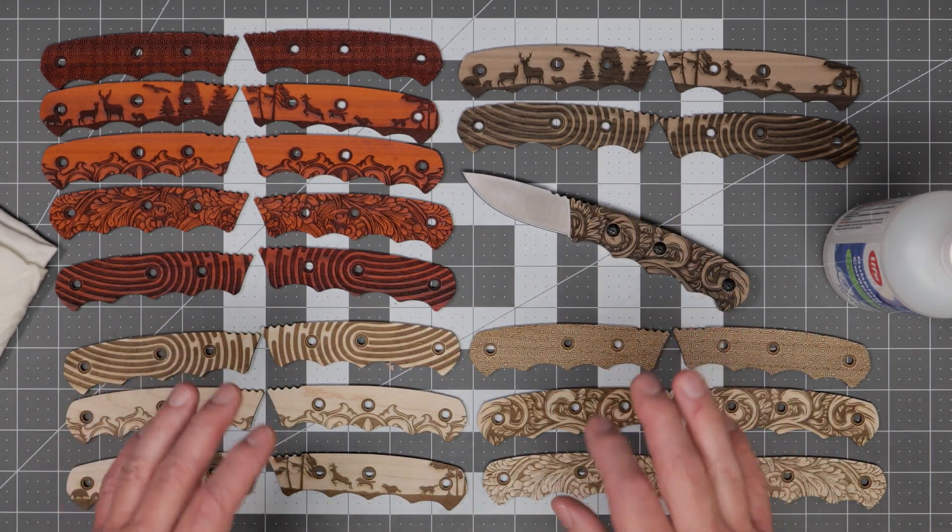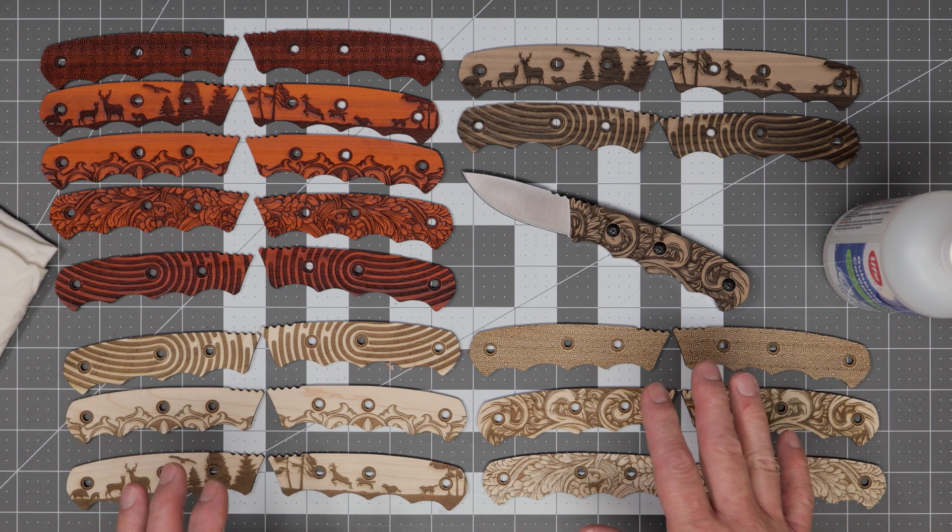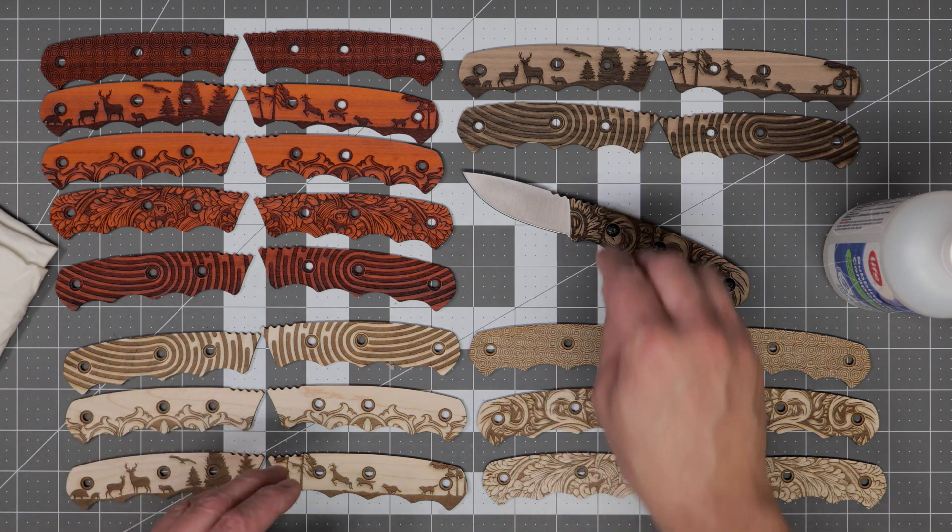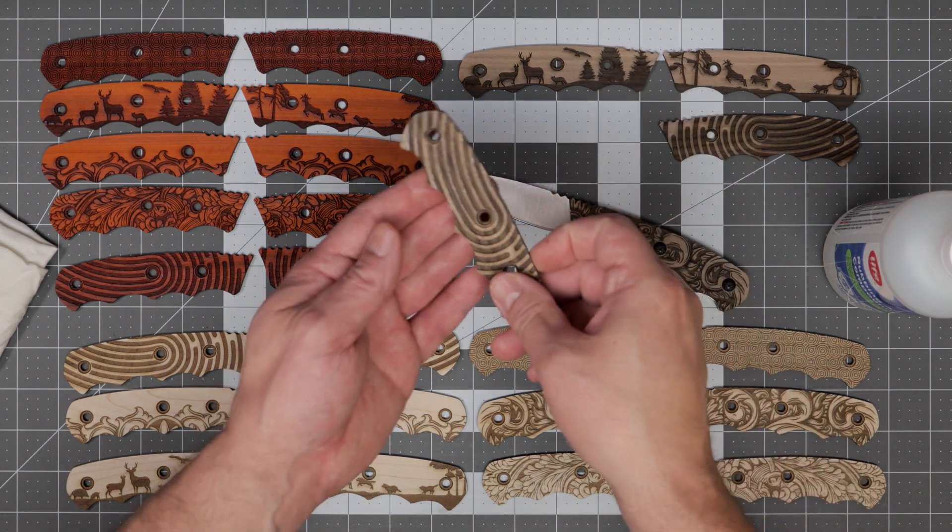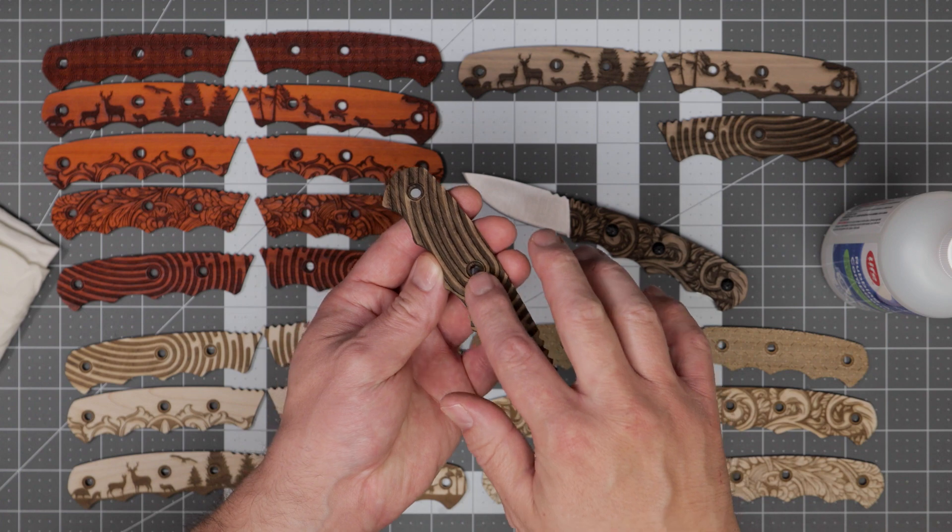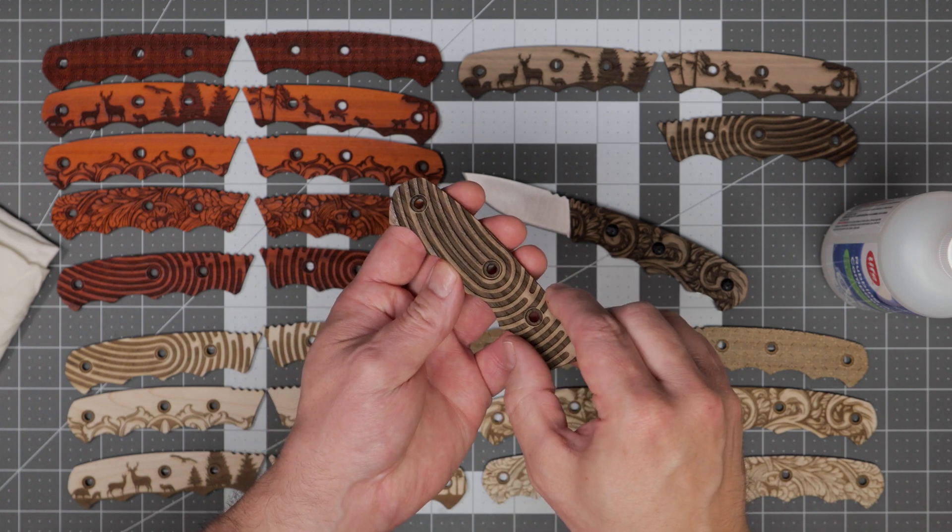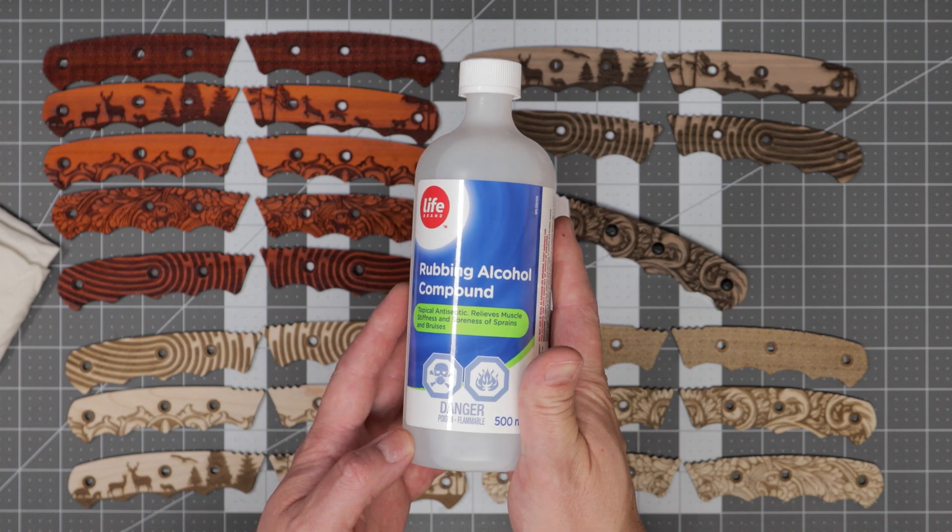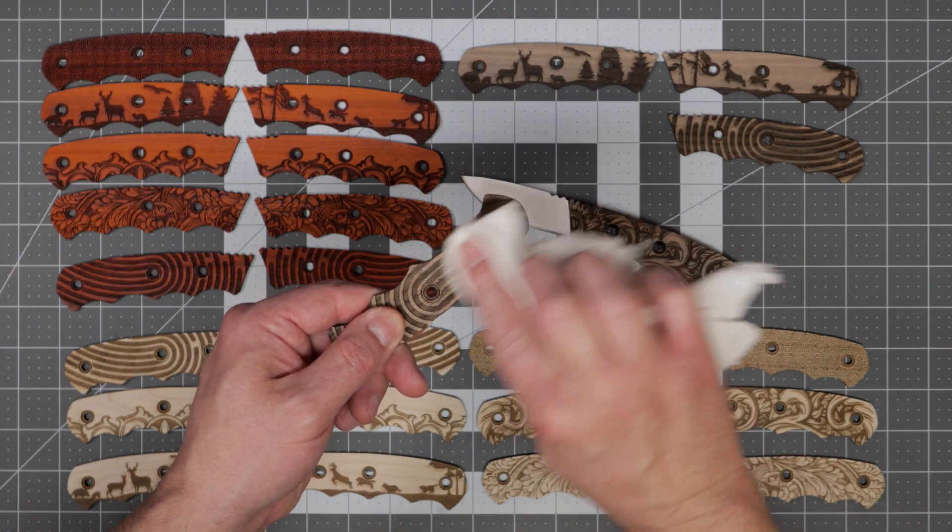So the next thing we want to do is to finish these. The first thing we need to do in the finishing process is to remove any of the resin that has collected on top of the scales from the engraving process. To do this I simply use some rubbing alcohol and a cloth to wipe off the resin.